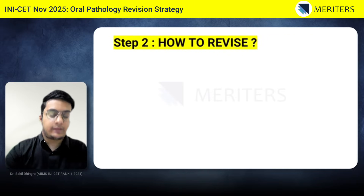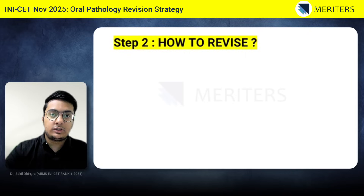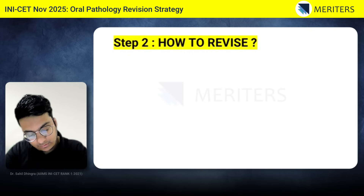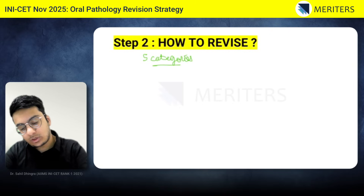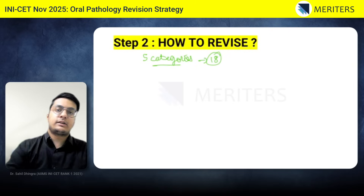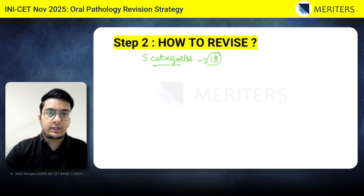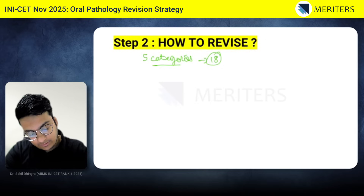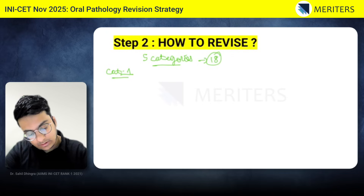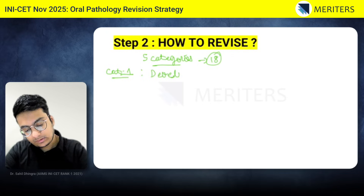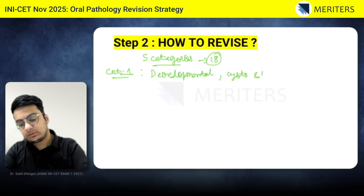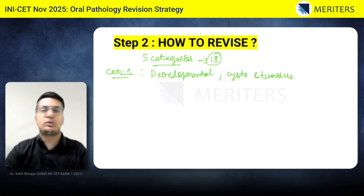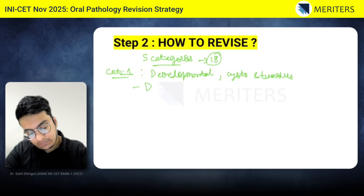Step two is how to revise. During my preparation, I divided the oral pathology subject into five subcategories. The reason for five categories is that it is a very vast syllabus, and if you try to cover all 18 chapters together, there's a chance you won't be able to memorize what was in which chapter. The first category is your developmental diseases — the developmental disturbances and your cysts and tumours.